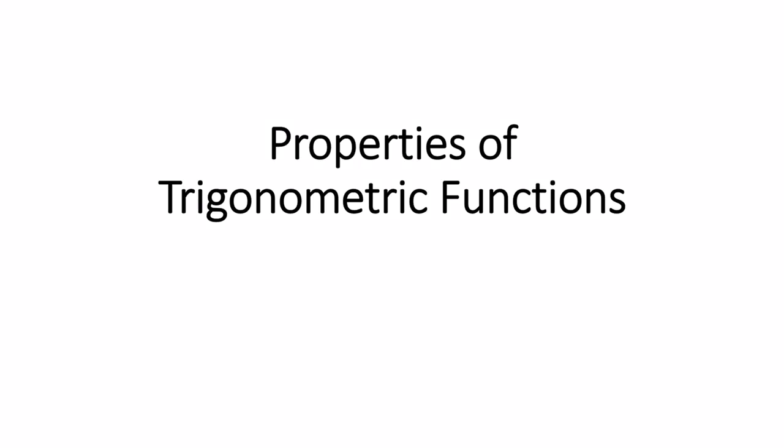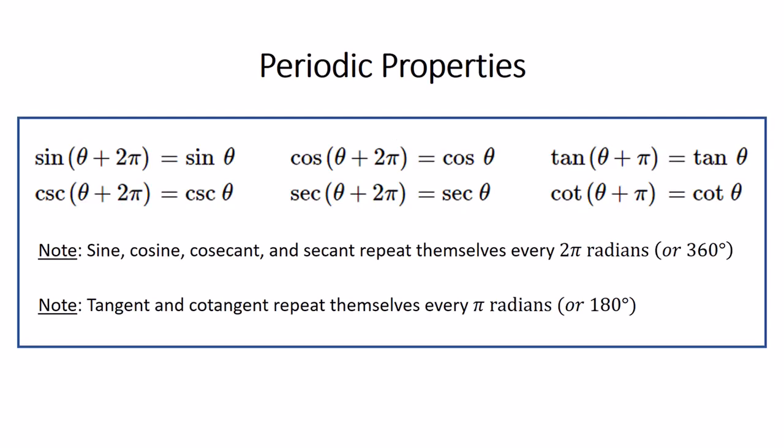We are now going to discuss properties of trigonometric functions. The first set of properties we will discuss would be the periodic properties, and what this tells us is how often trig functions repeat themselves. We've already discussed previously that every 360 degrees, every trig function repeats itself. This periodic property tells us that if you take an angle and add 2π to it, or 360 degrees, it doesn't change the value of the trig expression at all.